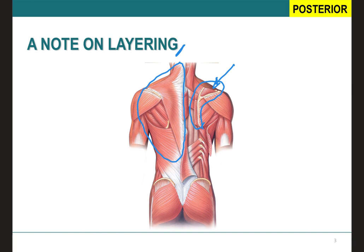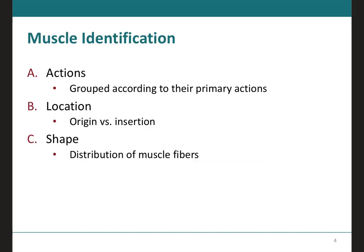Keep this in mind as we move forward. On the images, I will indicate the positioning — whether it's posterior, anterior, lateral, or medial — either written at the top or bottom of the image. This positioning will be important for you to orient yourselves. Moving forward, we will classify muscles according to three different categories: their action (such as flexing, extending, or abducting), their location (where they originate and insert), and their shape, which relates to their function.